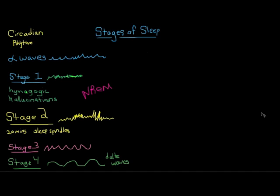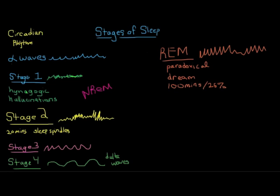You spend about 30 to 40 minutes total in stages three and four, and then you go back up through stage three, back up through stage two, into REM sleep. So far, stages one through four have all been what they call non-REM sleep, and they might be referred to as N1, N2, N3, N4 — because we make such a distinction between REM and non-REM.